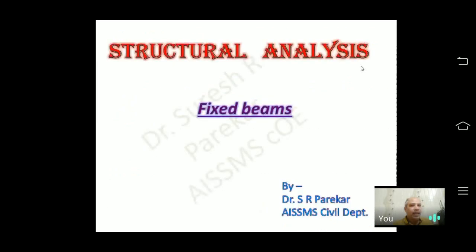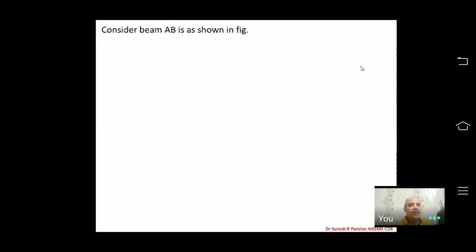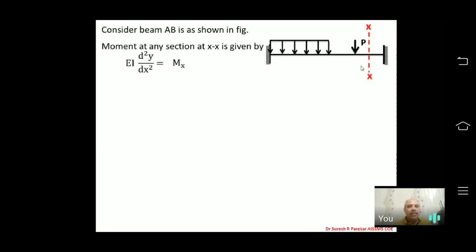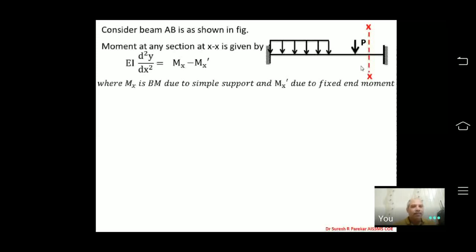We are dealing with fixed beams, and the moments developed are called fixed end moments. We consider a beam AB with any loads as shown in the figure. Using Macaulay's equation, the moment at any section XX is given by EI d²y/dx² = Mx − M'x, where Mx is the bending moment due to simple support and M'x is due to fixed end moments.